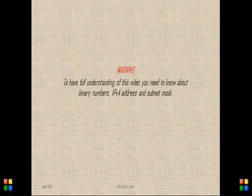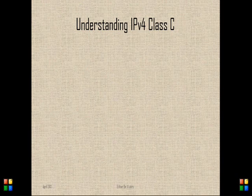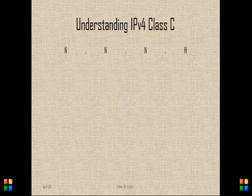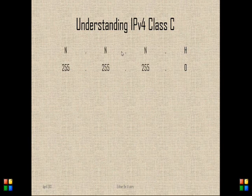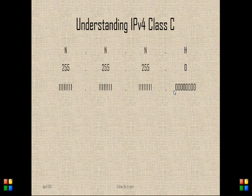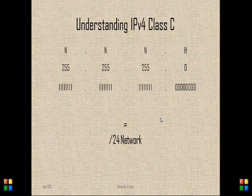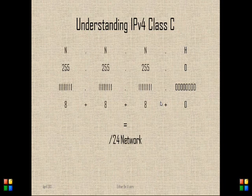Before we start, we're going to do a quick review on IPv4 address notation. The Class C address has three octets representing the network portion and the last octet representing the host portion. The subnet mask for a Class C address is 255.255.255.0 in decimal. The Class C network is also known as a slash 24 network because it has 24 bits activated on the network portion.